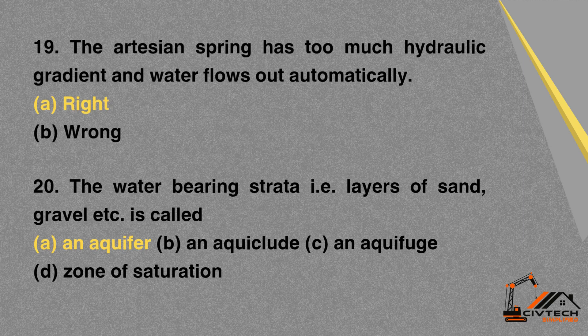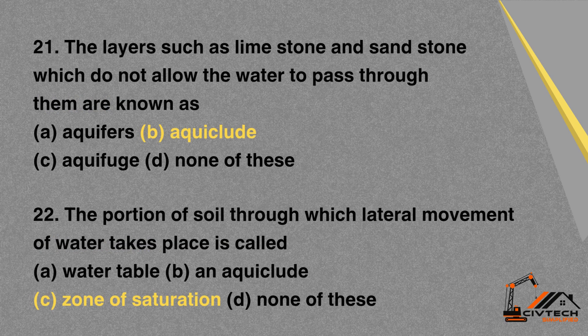MCQ 20: The water-bearing strata, i.e. layers of sand, gravel, etc., is called — A. An aquifer. B. An aquiclude. C. An aquifuge. MCQ 21: The layers such as limestone and sandstone which do not allow the water to pass through them are known as — A. Aquifers. B. Aquiclude. C. Aquifuge. D. None of these. Correct option: B. Aquiclude.